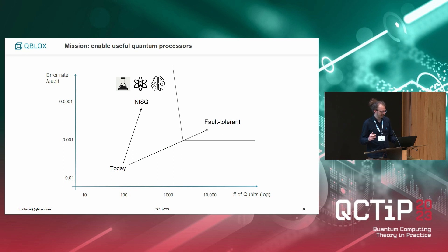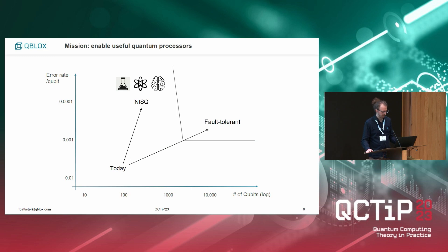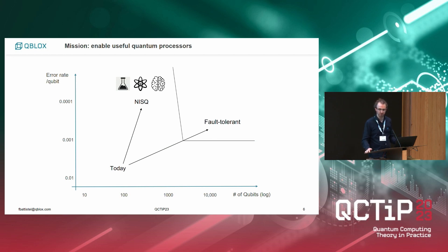We want to enable useful quantum computing and we look at both directions: NISQ and fault-tolerant quantum computing. NISQ means that maybe we can get away with fewer qubits than quantum error correction requires, but then they should be pretty good. If that cannot be reached, at some point you just need to scale up the number of qubits to reach the fault-tolerant regime and do quantum error correction.